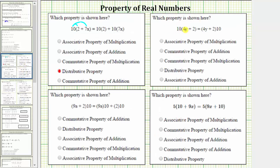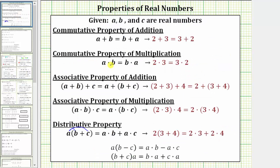Next we have 10 times the quantity 4y plus 2 equals the quantity 4y plus 2 times 10. Notice on both sides of the equation we have a product, but on the left side we have 10 times the quantity 4y plus 2, and on the right we have the quantity 4y plus 2 times 10. The order of the multiplication has changed, which is the commutative property of multiplication. More formally, this is expressed as a times b equals b times a.